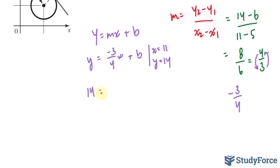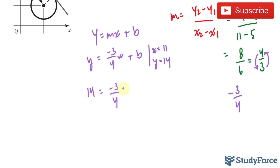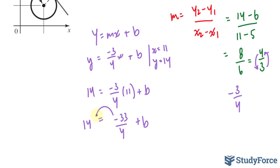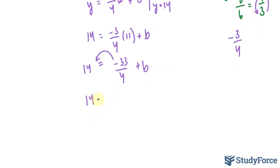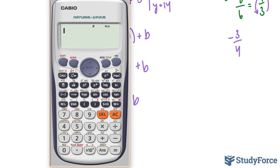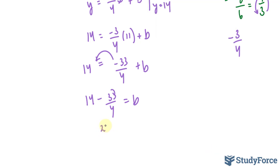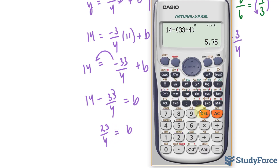So: 14 is equal to negative 3 over 4 times 11 plus b. Negative 3 times 11 is negative 33 over 4, so we have 14 on the left side. Bringing the fraction over, we end up with b equals 14 minus 33 over 4. Using a calculator — make sure the fraction is in brackets — you end up with 23 over 4 as your y-intercept, which converts to 5.75 in decimal form.